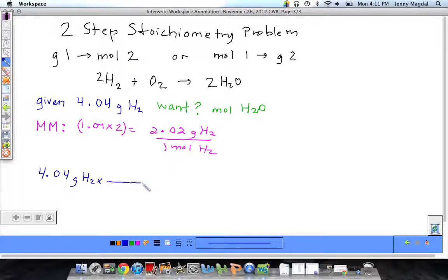I'm going to set up my first fraction. I need to get rid of grams of H2 to get to moles of H2. So, I'm going to put what I want to get rid of on the bottom, which is my mass of hydrogen, which I get from my molar mass, 2.02 grams of H2 for every one mole of H2. Again, I need to make sure this entire ratio gets used right there.